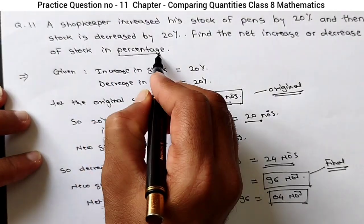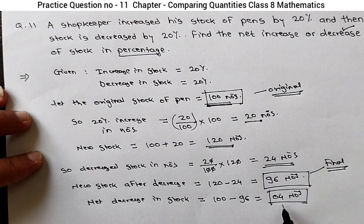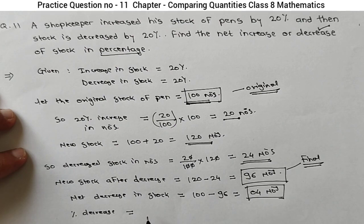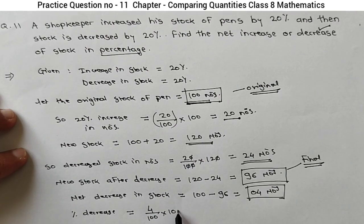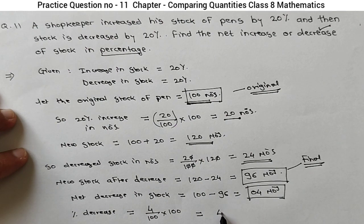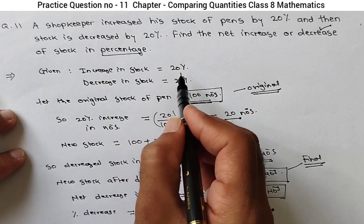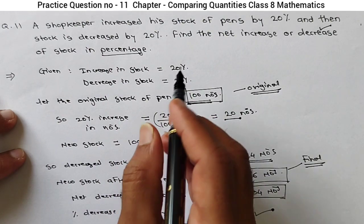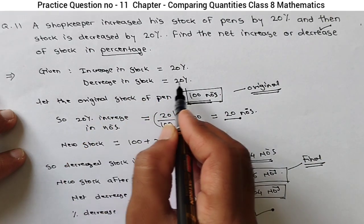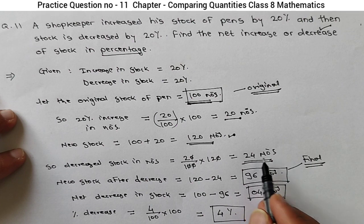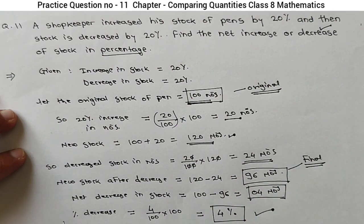Now what is asked is in percentage. We got the decrease in numbers. Now we have to calculate in percentage. Percentage decrease equals 4 upon 100 multiplied by 100, which is 4%. Though there is the same percentage for increase and decrease, the base value for increase is 100 and for decrease it is 120. That's why in numbers, the decrease is more — 24 versus 20 — giving a net 4% decrease.